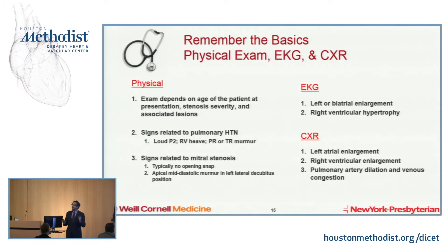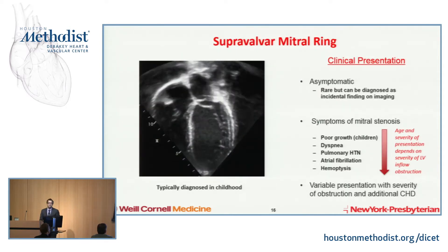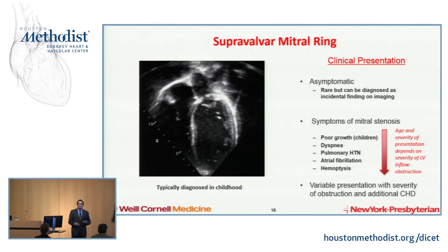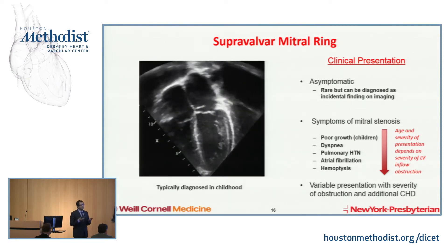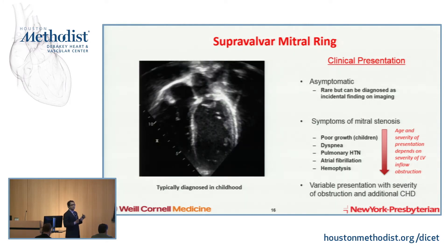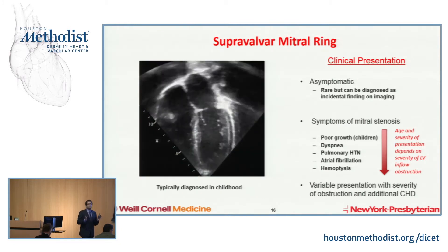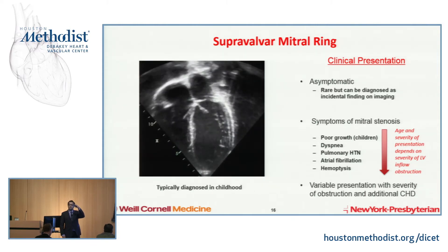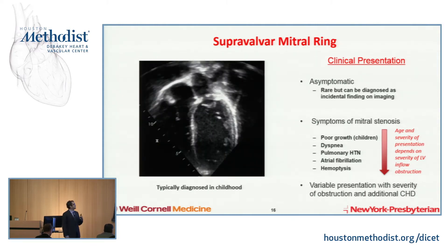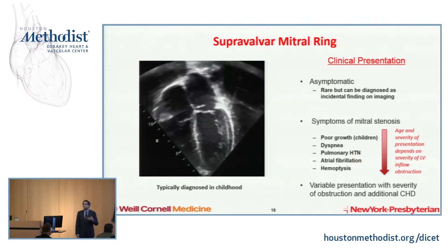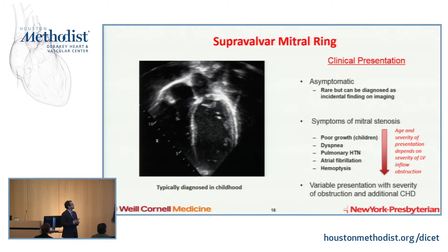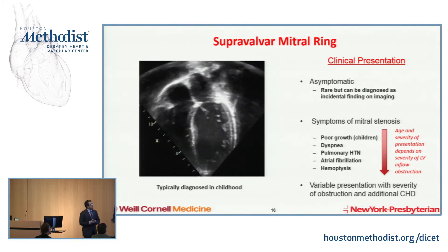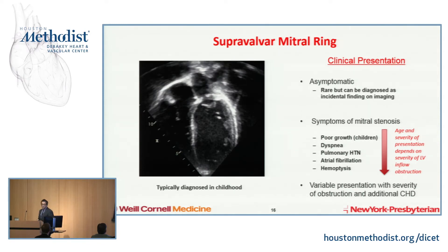On EKG and chest x-ray, you'll see signs of pulmonary hypertension, left atrial enlargement, occasionally biatrial enlargement. You'll only see signs of right atrial enlargement if you've already developed pulmonary hypertension from the mitral obstruction. Regarding the ring itself, you can be asymptomatic, though it's very rare to diagnose a supravalvular mitral ring for the first time in adults — though it can happen. Symptoms in children range from poor growth to surgical urgency with bad obstruction. In adults with Shone's complex or combinations of left-sided obstructions, patients can develop dyspnea, pulmonary hypertension, atrial fibrillation, hemoptysis, and all the complications related to pulmonary hypertension.